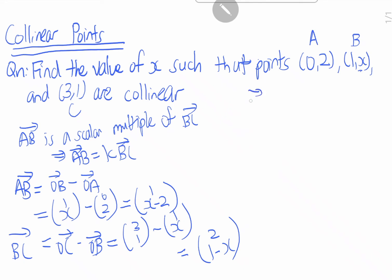So now again, AB equals to k times BC. This means that (1, x-2) equals to k times (2, 1-x). So let's compare coefficients here.